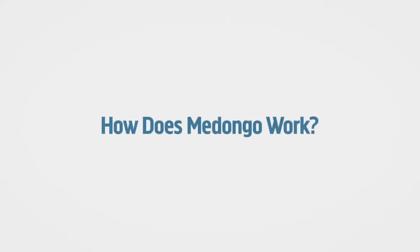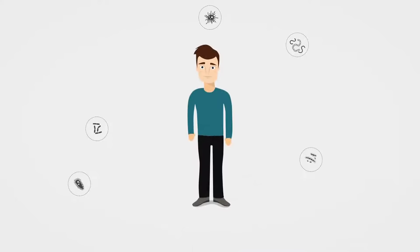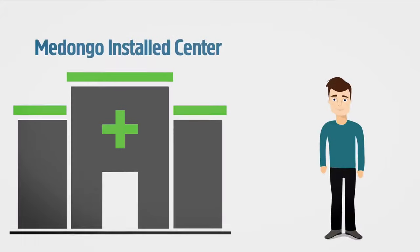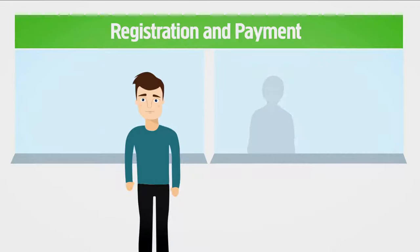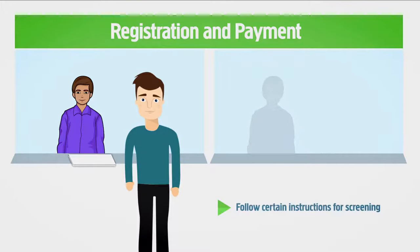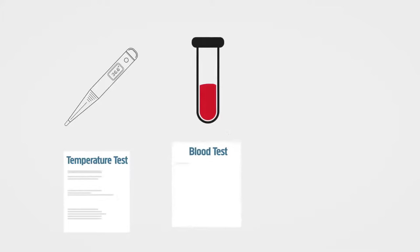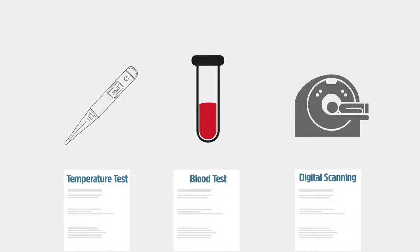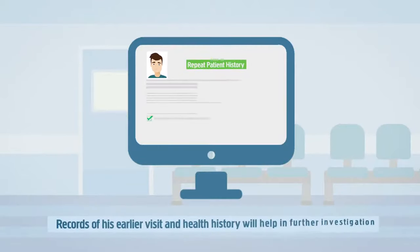How does Midongo work? A patient needing medical care, whether for fever, a skin rash, or anything else, goes to their nearest Midongo kiosk. Upon registration and payment, the patient is assisted by a trained attendant in undertaking a series of essential tests determined by their symptoms. This is stage one of the process, and can include testing for fever, taking blood samples, digital scanning of skin infections, and much more.